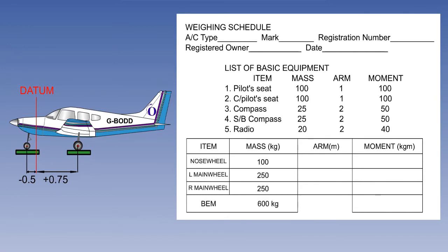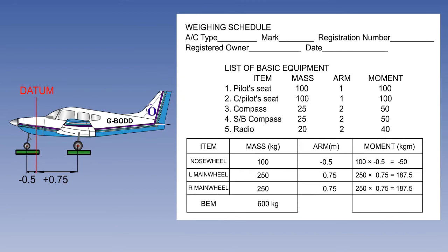First, the mass readings for each wheel are entered and totalled. Entering the arms, we can calculate the individual moment by multiplying the mass by the arm. Finally, the total moment is calculated. In this case, the total moment is 325 kgm.